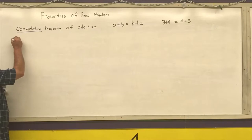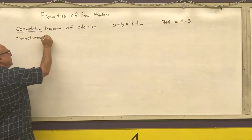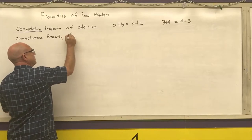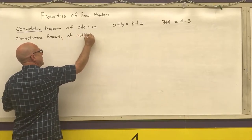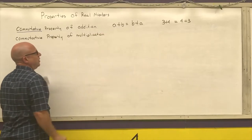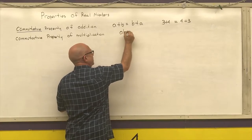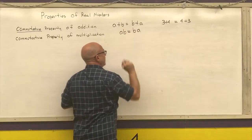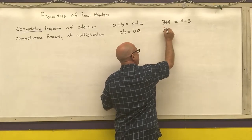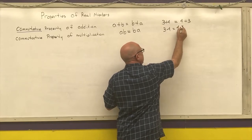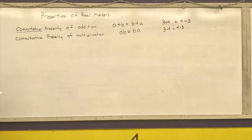Then I have the commutative property of multiplication. Again, order does not matter. A times B is the same thing as B times A. 3 times 4 is the exact same thing as 4 times 3. So those are my two commutative properties.